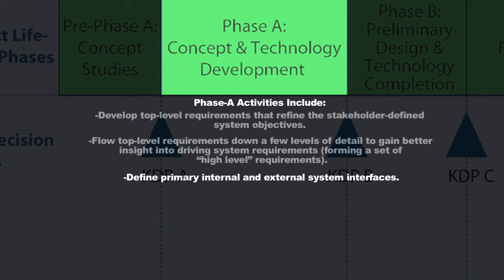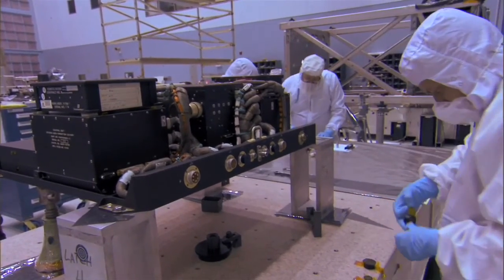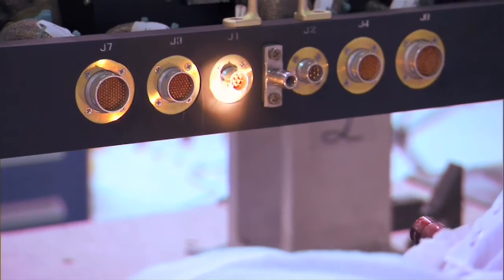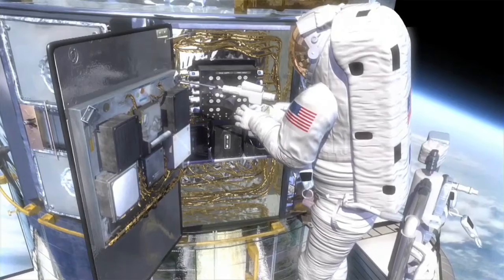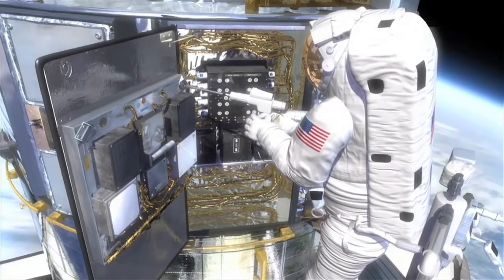You're also going to define all your primary internal and external system interfaces. As you decompose any problem into smaller and smaller pieces, there become many more pieces, and they all have to interface with each other. Within the satellite itself, the power system needs to connect to the propulsion system or the computer system. You need to define those interfaces because many teams will be working on individual parts of the spacecraft and need to understand exactly what the interface will be between them and all other parts, so that when everything comes together it can work properly.